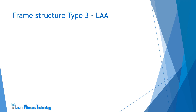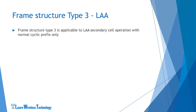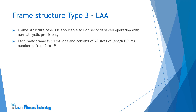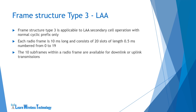Type 3 frame structure was introduced in later releases of LTE. It is applicable to LAA secondary cell operation with normal cyclic prefix only. LAA, or License Assisted Access, is a feature that allows LTE signals to be transmitted in unlicensed spectrum. Each radio frame is 10 milliseconds long and consists of 20 slots of 0.5 millisecond each, numbered from 0 to 19. The 10 subframes within a radio frame are available for downlink or uplink transmissions, where a downlink transmission may occupy one or more consecutive subframes.